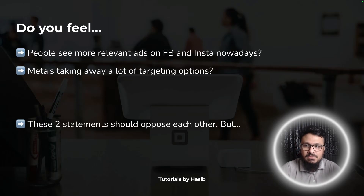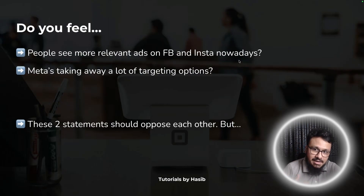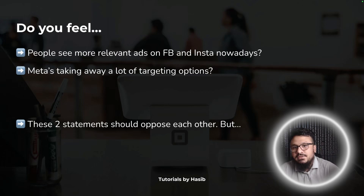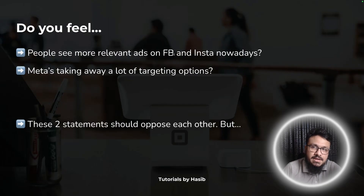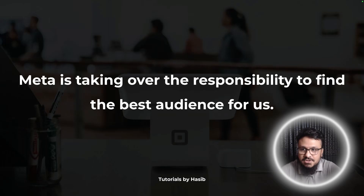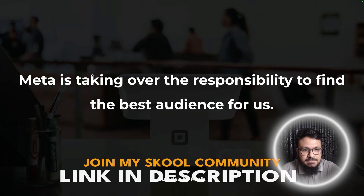People are seeing more relevant ads lately on Facebook and Instagram, yet at the same time Meta has taken away a lot of targeting options. Interest-based targeting isn't working, exclusion targeting is gone, and loads of other targeting options are vanishing every day. These two statements oppose each other — if people are seeing more relevant ads, that doesn't mean you get to do more targeting. The more relevant ads people see, the more targeting options are gone.